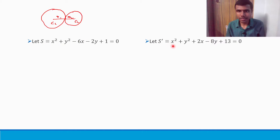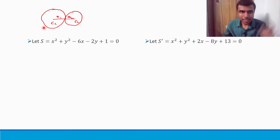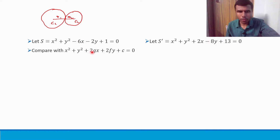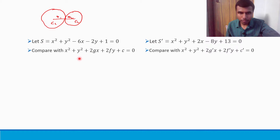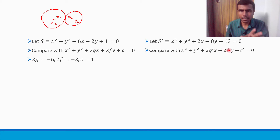S and S dash are there. I want to check whether the distance between the centers equals the sum of radii. I first need the centers and the radii of the two circles. Compare with the standard equation of a circle: x² + y² + 2gx + 2fy + c = 0. For the second circle I use 2g dash, 2f dash, and c dash to differentiate, since these are two different circles with different centers.